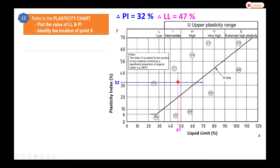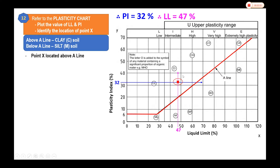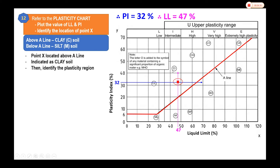We need to identify the location of the intersection point — whether it is above or below the A-line. The intersection point x is located above the A-line, which indicates that the soil is in the clay soil region. The symbols in that region are all C, confirming the soil is clay.